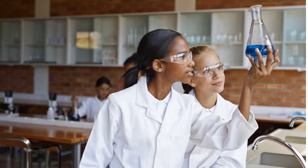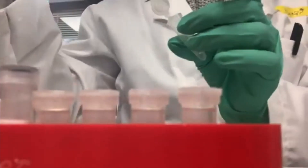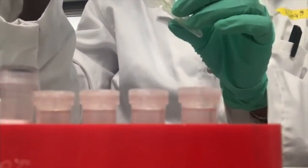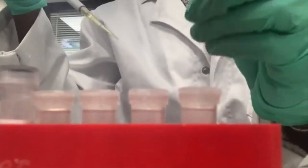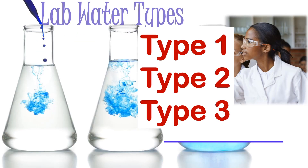Hi everyone, in this video we're going to cover the water quality types that you will encounter in the laboratory, or that you will need to keep an eye on in terms of what kind of assay you are doing. They range from Type 1 to Type 3, Type 1 being the purest and Type 3 being the basic essential minimum requirement of water. Let's look at them in detail.